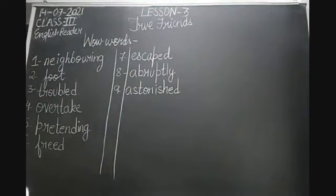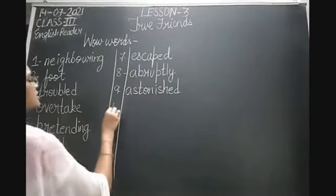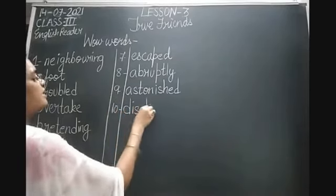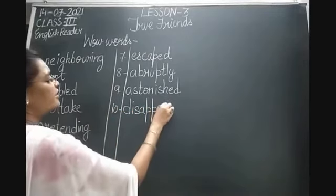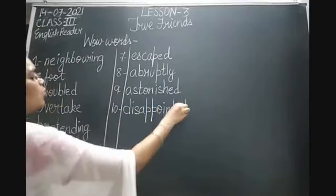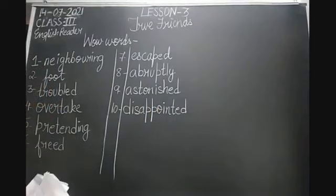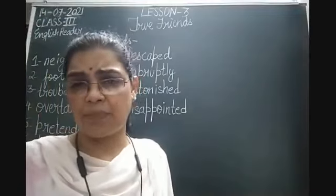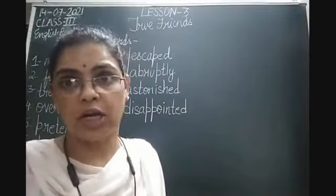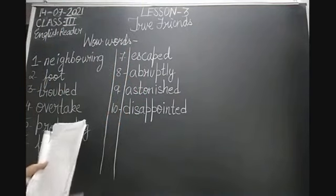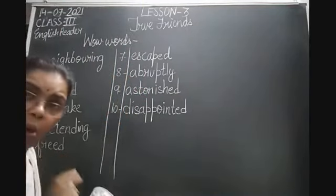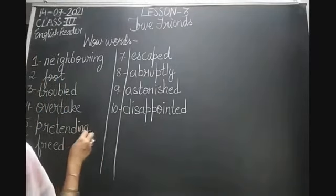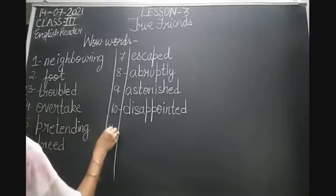The tenth word is 'disappointed' — D-I-S-A-P-P-O-I-N-T-E-D. Disappointed means sad and upset — kisi cheez pe sad hona, upset hona, dukhi hona. Please ensure that you all spell the words correctly and that the pronunciation is accurate.